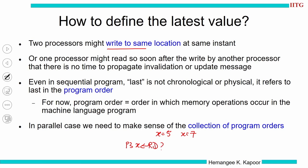So P3 wants to do a read for x — what value should it get? When x became 5, we were supposed to inform everybody, but we were not able to reach P3 before it issued its read of x. There was no time to propagate the information. So is P3 getting the most latest value? Is it going to get the value equal to 5, equal to 7, or the original value already in memory? How do we understand this concept?